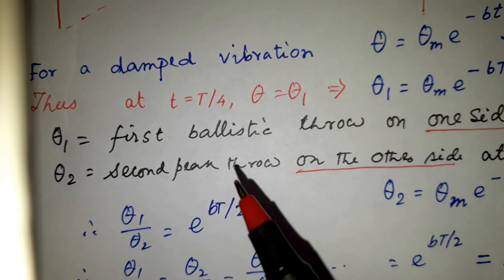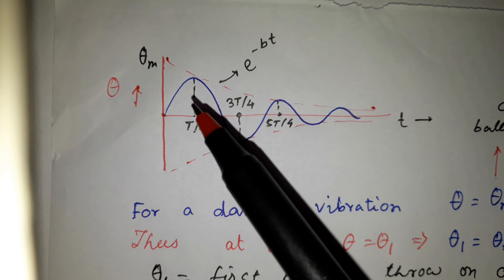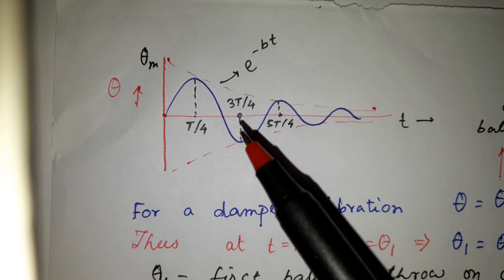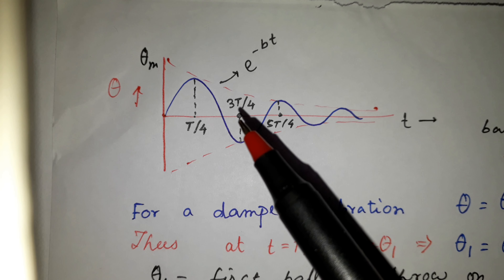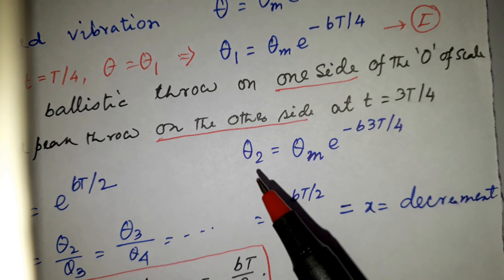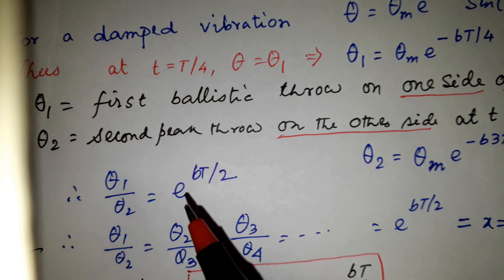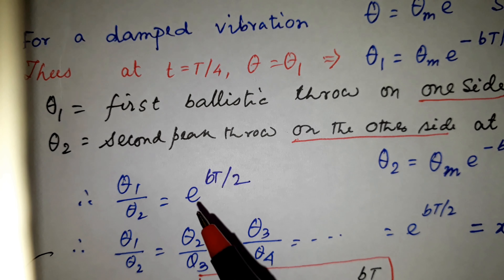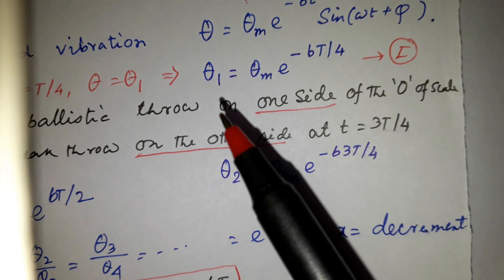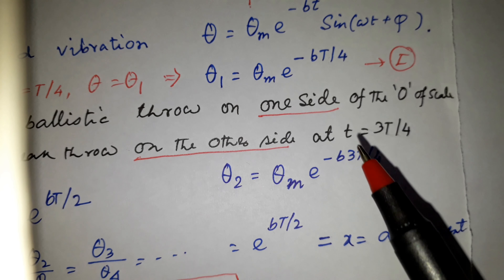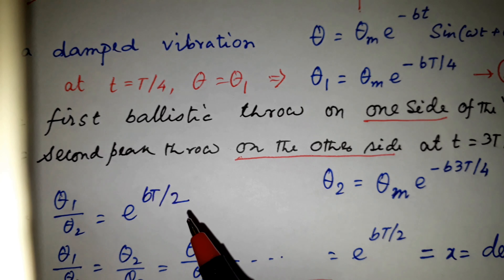Theta_2 is the second peak throw on the other side. Putting t equal to 3T/4, we get theta_2 equal to theta_m times e to the power minus b times 3T/4. So theta_1 divided by theta_2 is clearly e to the power bT/2, since theta_m cancels out. This gives bT/2.